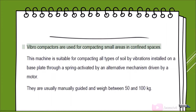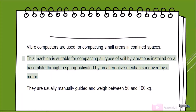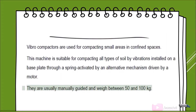Vibro compactors are used for compacting small areas in confined spaces. This machine is suitable for compacting all types of soil by vibrations installed on a base plate through a spring activated by an alternative mechanism driven by a motor. They are usually manually guided and weigh between 50 and 100 kg.